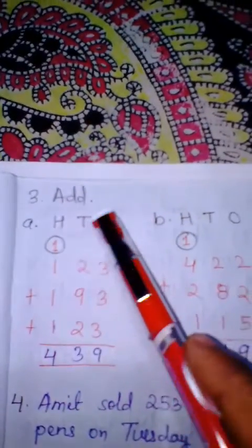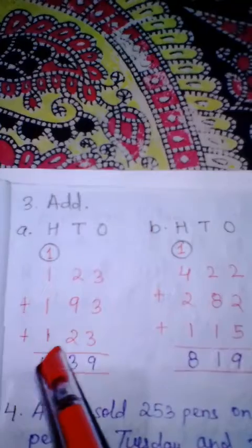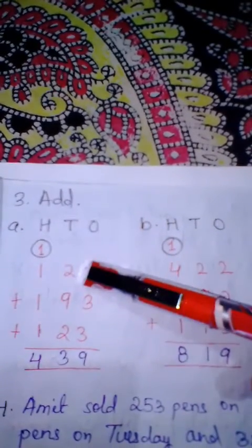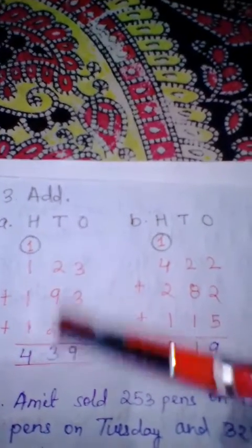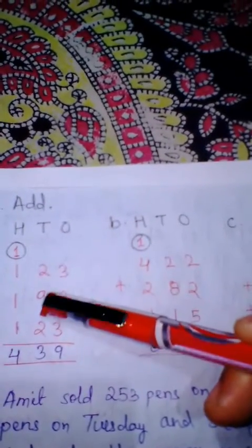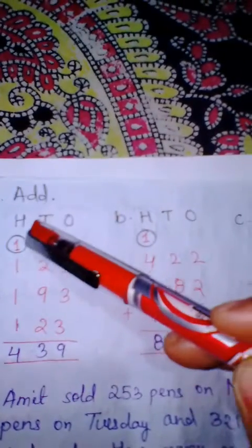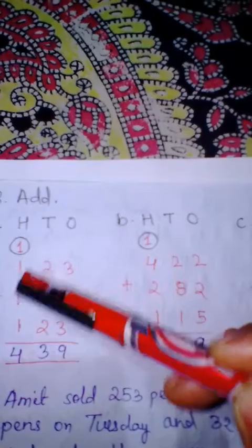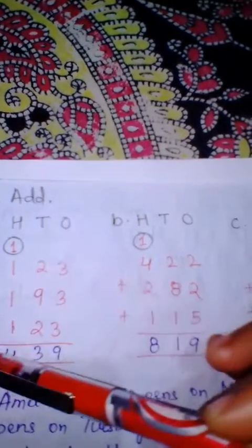Now question number 3 is to add three numbers. Part A: 123 plus 193 plus 123. So 3 plus 3 is 6, and 6 plus 3 is 9. Write 9. Now 2 plus 9 is 11, and 11 plus 2 is 13, so we write 3 and carry 1 to the hundreds place. Then 1 plus 1 is 2, plus 1 is 3, and carry 1 makes 4. So our answer is 439.